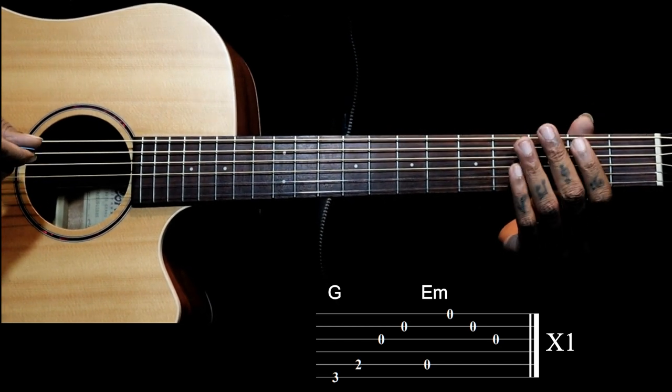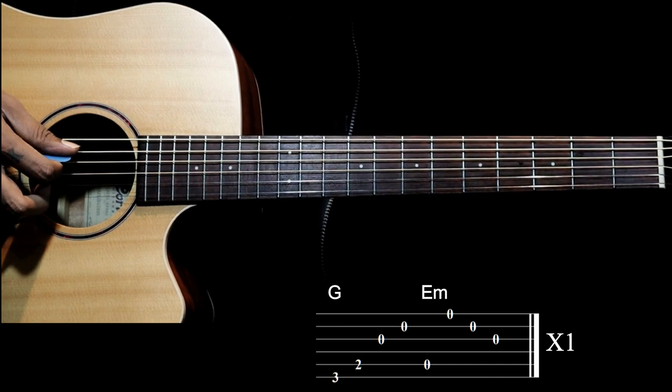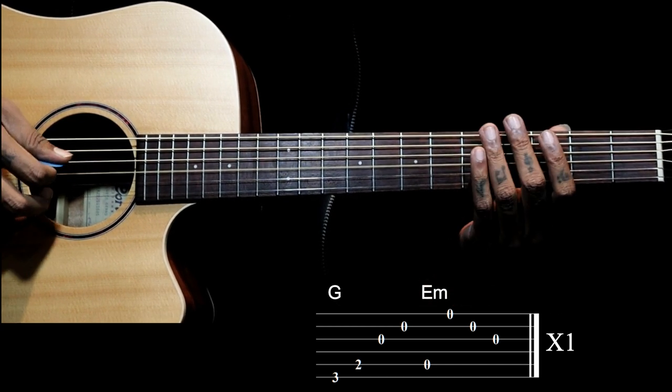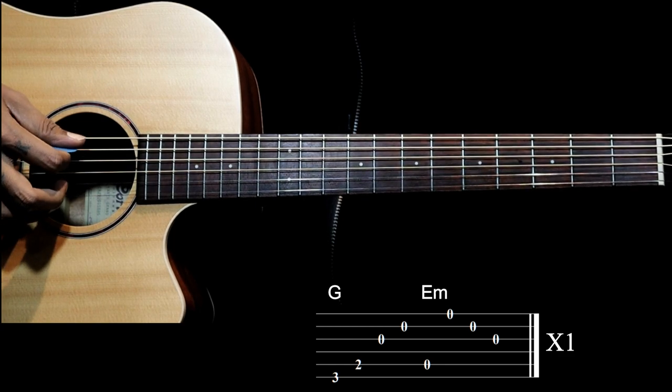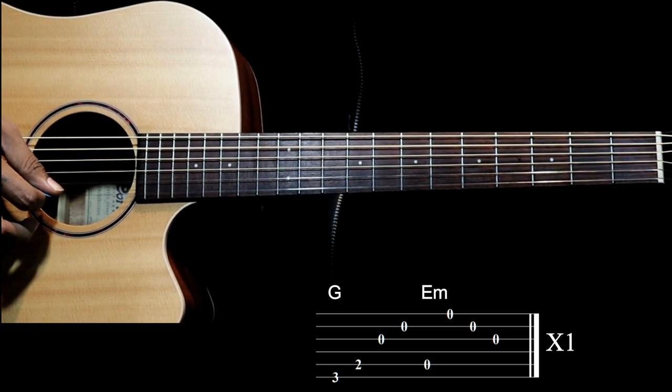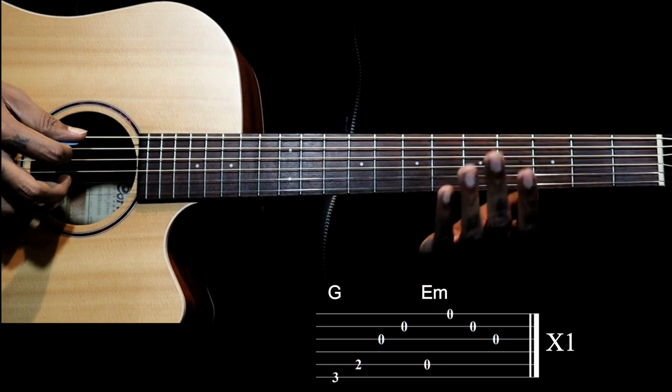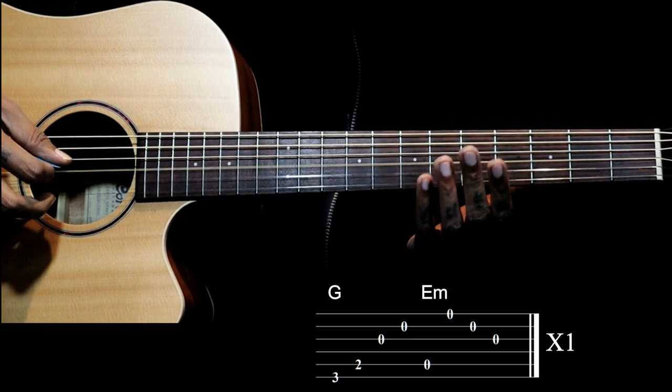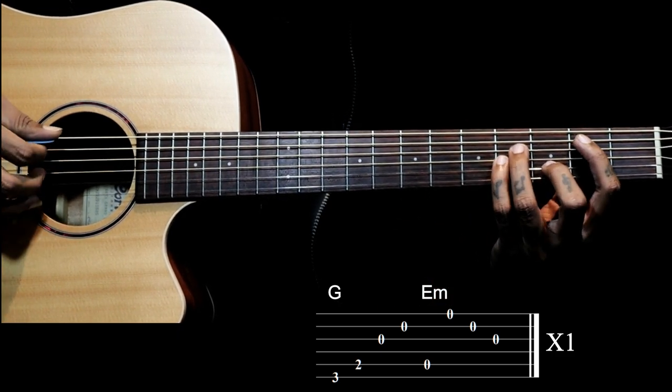And we have an open E minor with A as bass. We just pluck 5th string open, 1st string open, 2nd string, 3rd string. So 5, 1, 2, 3. That's the last part.